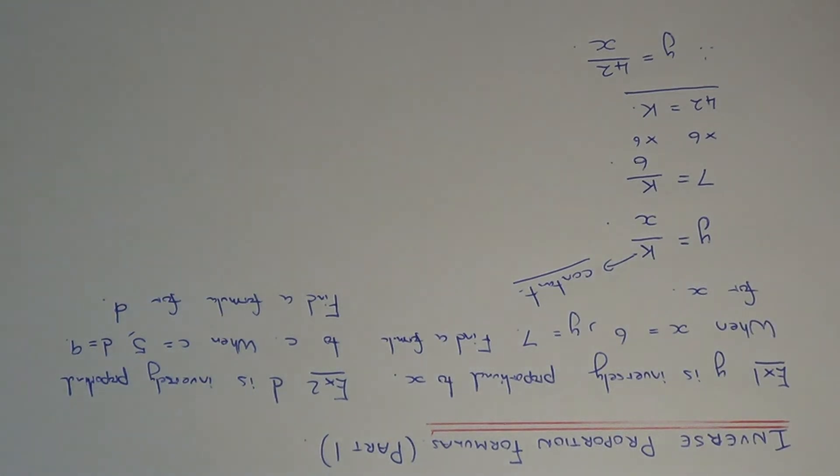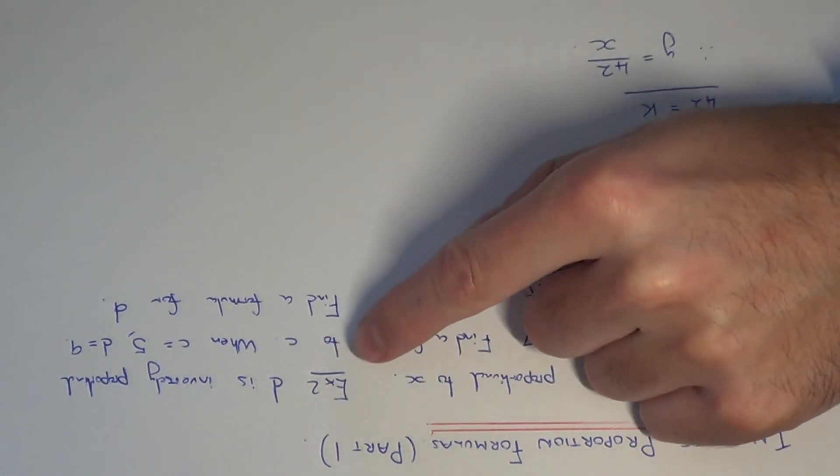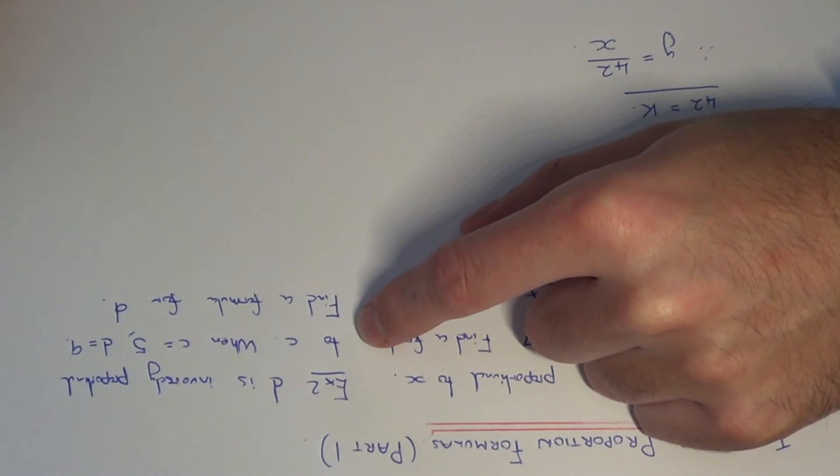So let's do one more example then, example 2. So this time we've got d is inversely proportional to c, and when c equals 5, d is equal to 9, and we're going to find a formula for d.